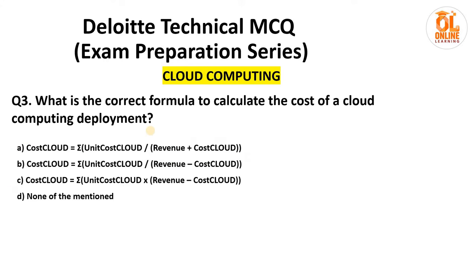Next question: what is the correct formula to calculate the cost of cloud computing? There are a lot of formulas given, and the correct answer is option B. The unit cost is actually defined as the cost of a machine instance per hour or any other resource, so that exact formula is option B.